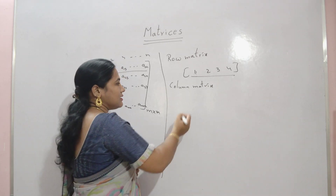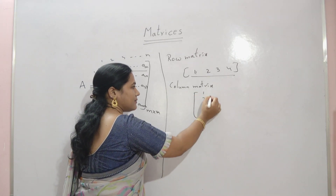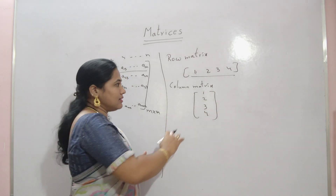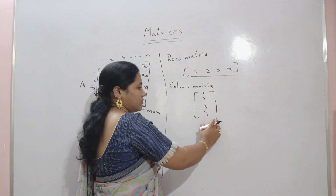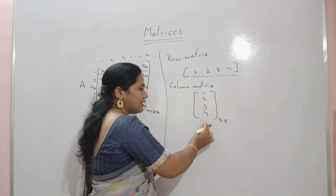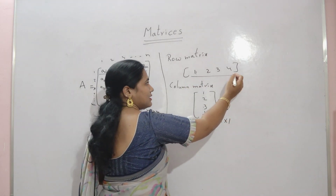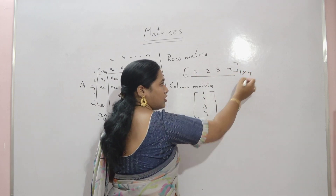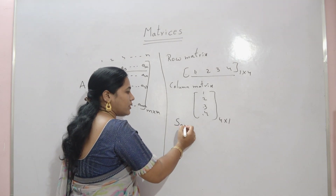And the next one is a column matrix. In a column matrix, only one column is present. If you observe only one column in a matrix, then it is called a column matrix. What is the order of this matrix? There are 4 rows and one column, so it is a 4 by 1 matrix. And the row matrix has only one row and 4 columns, so it is a 1 by 4 matrix.